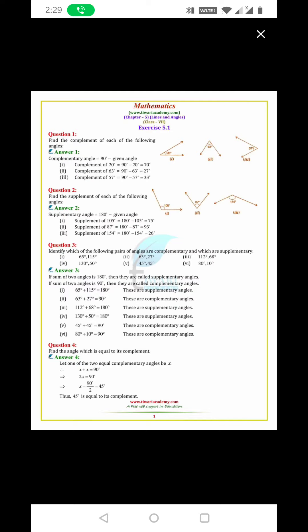Find the angle which is equal to its complement. So let one of the two complementary angles be X. X plus X is equal to 90. 2X equals 90. X equals 90 by 2. It equals 45. So this angle is 45 degree.